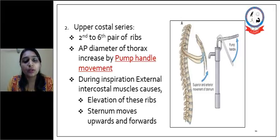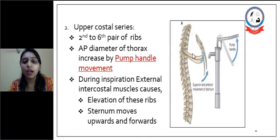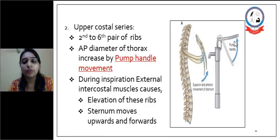The upper costal series includes the 2nd to 6th pair of ribs. It also increases AP diameter by a movement called pump handle movement. The ribs are anteriorly attached with the sternum and posteriorly attached with the thoracic spine. Contraction of the external intercostal muscles during inspiration leads to elevation of these ribs, and the sternum moves upward and forward — resembling a pump handle movement.